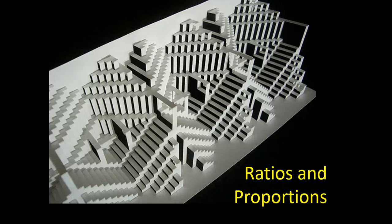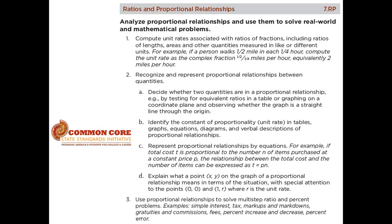Our next topic is ratios and proportions. Ratios and proportions are introduced for the first time in 7th grade in the Common Core State Standards, and it's a natural place for it to be, because by 7th grade students are expected to be proficient in their understanding of fractions. So by 7th grade, they're ready to start applying those fractions to other problems, and ratios and proportions are a natural progression for the application of fractions.